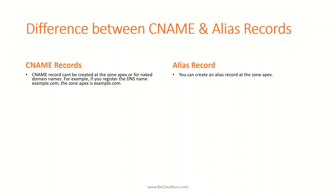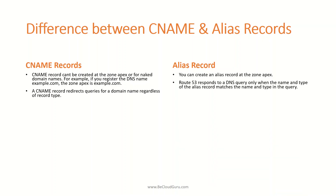A CNAME record redirects queries for a domain name regardless of the record type — meaning it will always redirect the query regardless of the query specifications. For an Alias record, Route 53 responds to a DNS query only when the name and type of the alias record matches the name and type in the query. If the name and type in the query match the alias record, Route 53 responds; otherwise it will not.